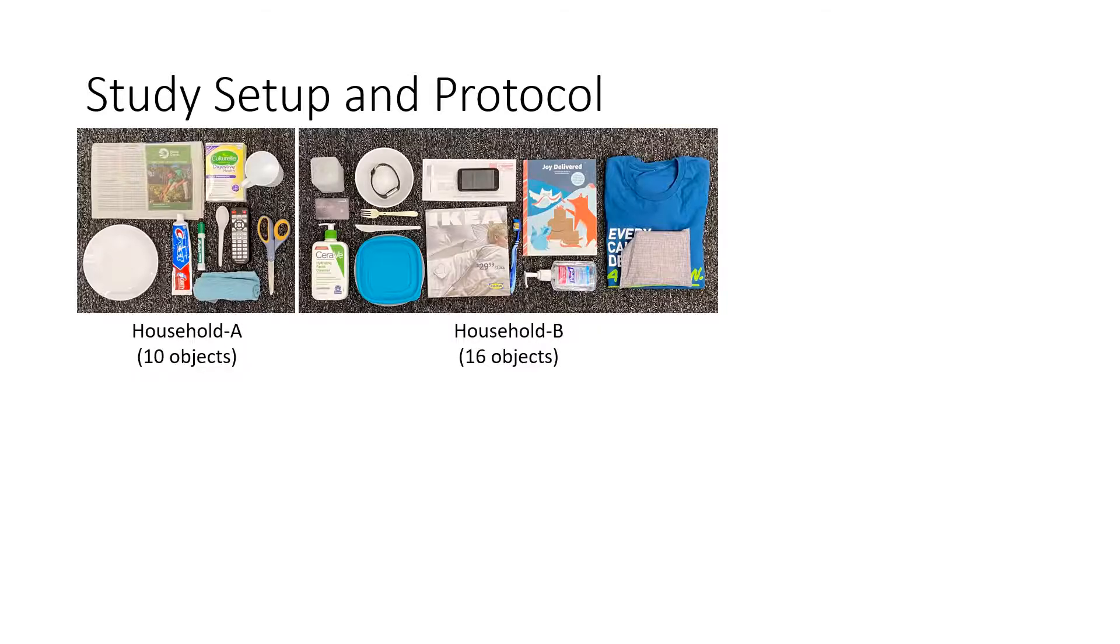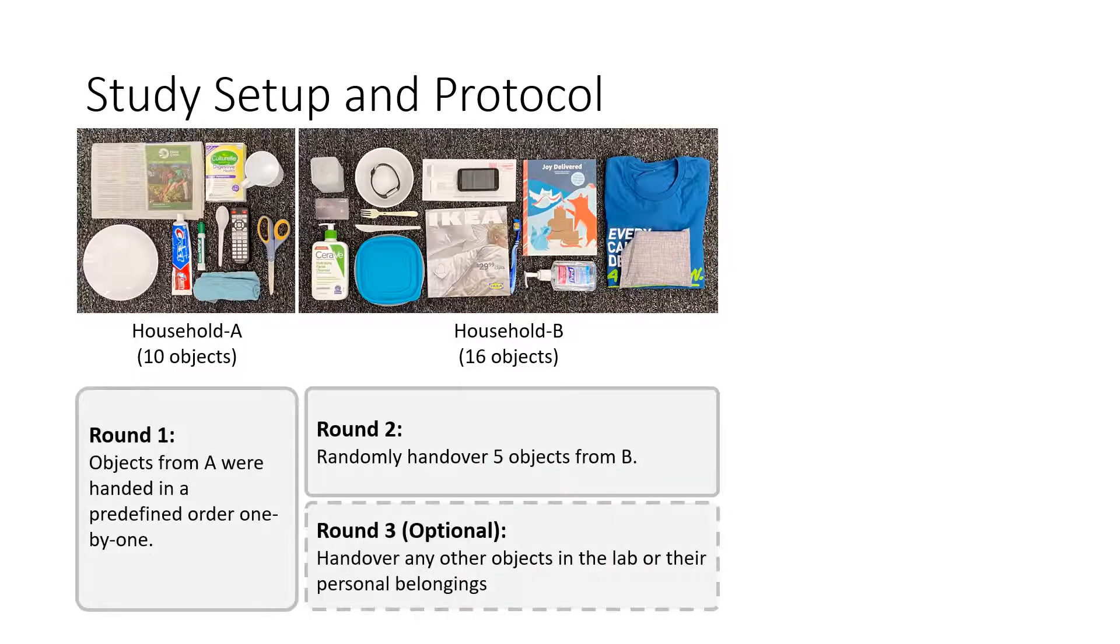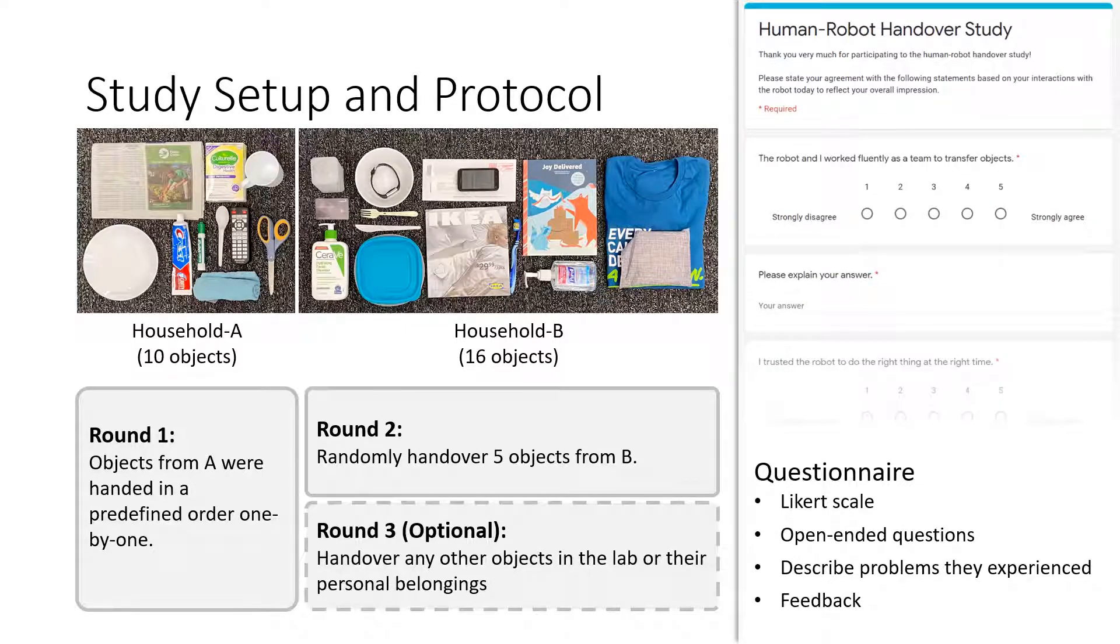We split the objects into two subsets, A and B, and conducted three rounds of experiments with each participant. After all three rounds, participants were asked to fill a questionnaire with Likert scale and open-ended questions and describe any problems they experienced.